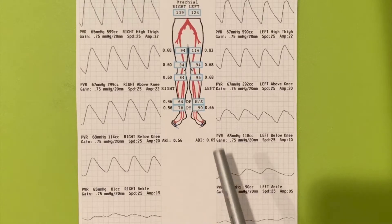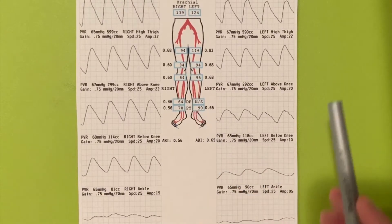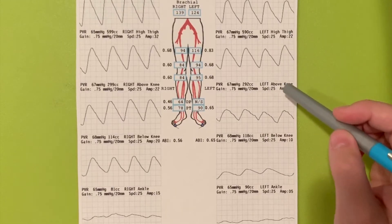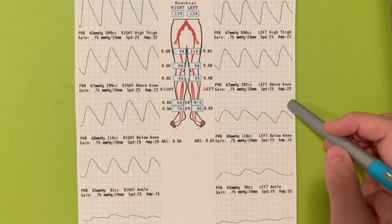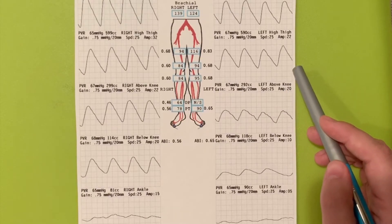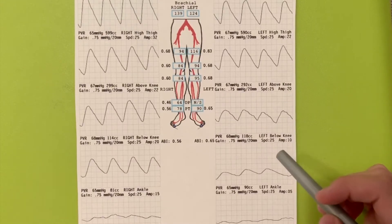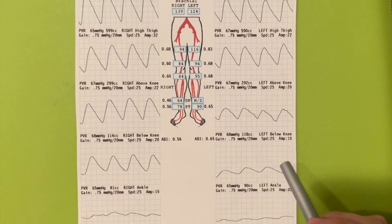There was no signal in the left dorsalis pedis artery. The PVR waveforms show significant deterioration of the left calf, which indicates superficial femoral artery occlusive disease. As you can see, the above the knee shows mild disease, the below the knee shows moderate disease, and the ankle and metatarsals show severe disease. The left ankle and metatarsal PVRs are blunted, consistent with significant occlusive disease.